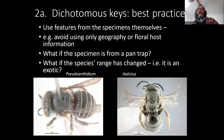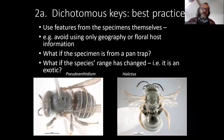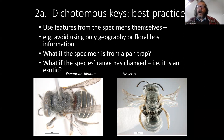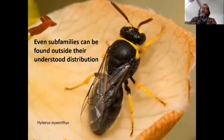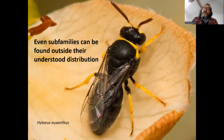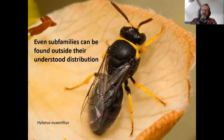Another best practice: actually use features from the specimen itself. Don't use geographic area or what flowers it was collected from — you can't tell what flowers the bee was on if it was in a pan trap. And we have a nasty habit of translocating species from one part of the world to another, so geographically based keys will fail. Even subfamilies have been taken outside their normal range: Hylaeinae were absent from Chile until recently, and two species have been introduced there, including this Australian one. Euryglossini were only known in Australasia until somebody took some to South Africa.